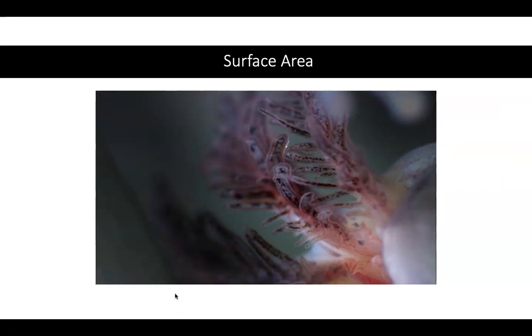I mentioned before, surface area is really important for this. And again, this is a picture here of an axolotl and their external gills, where we can see really thin projections, which would mean a really high surface area compared to their volume. So it's going to maximize that surface area for where gas exchange can occur.